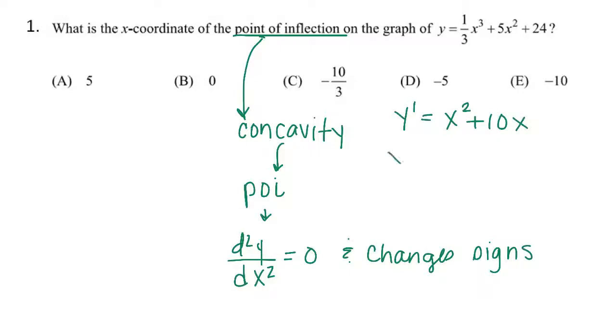So then the second derivative is going to be 2x plus 10. So my point of inflection, or possible point of inflection, well let's set this equal to zero and we get zero equals 2x plus 10, x is negative 5.